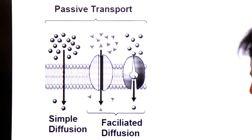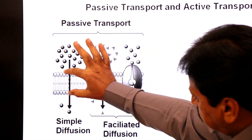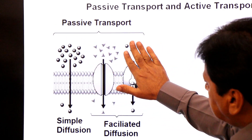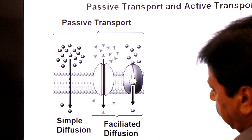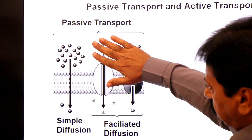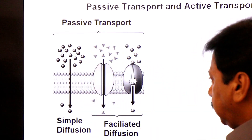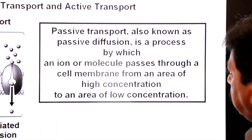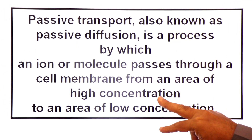Note the diagram: outside the plasma membrane, molecules are in higher concentration; inside the plasma membrane, molecules are in lower concentration. When molecules or substances cross the plasma membrane from higher concentration to lower concentration, this process is called passive transport, also known as passive diffusion.